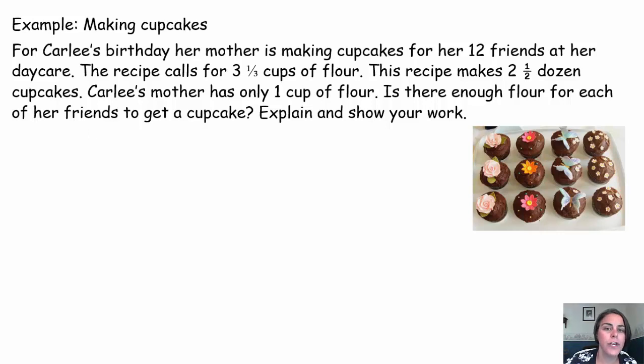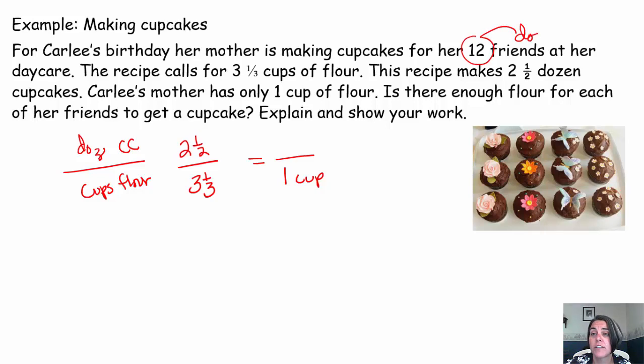Okay, hopefully you paused the video. So we are looking at dozens of cupcakes per cups of flour. We know we can make 2 and 1/2 dozen cupcakes with 3 and 1/3 cups of flour. However, Carly's mom only has one cup of flour. Will she be able to make enough cupcakes for Carly's 12 friends, which is actually a dozen friends? So she needs to be able to make a dozen cupcakes. If we look here, 3 and 1/3, what do I divide by to rewrite this as a unit rate with a denominator of one? I'll divide the denominator by 3 and 1/3. If I'm going to divide the denominator by 3 and 1/3, I divide the numerator by 3 and 1/3. So the problem we need to solve is 2 and 1/2 divided by 3 and 1/3.